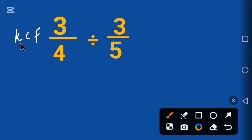K stands for keep, C stands for change the division to multiplication, F stands for flip the fraction. So let's do it here.